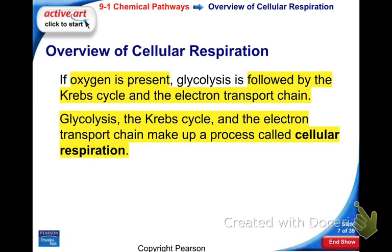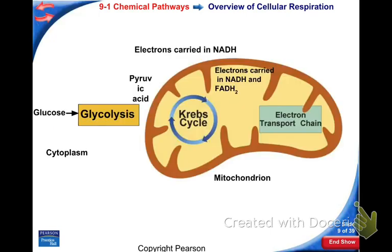In this first step called glycolysis, we take glucose and break it down into something called pyruvic acid. Glycolysis takes one glucose molecule and makes two molecules of pyruvic acid. Notice this is happening outside of the mitochondrion. Step number one is glycolysis. Step number two is the Krebs cycle. Step number three is the electron transport chain.